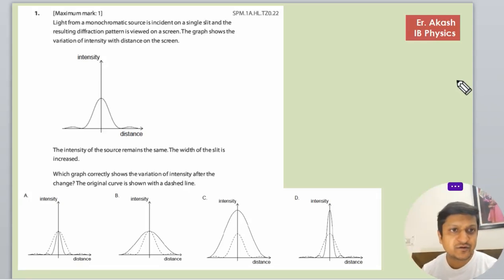Champions, how are you? So there's another question and the question says that light from a monochromatic source is incident on a single slit.